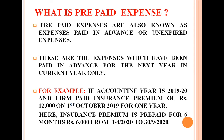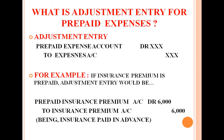This is prepaid insurance premium. Now let us see the adjustment entry for a prepaid expense. Prepaid expense is a type of asset — any expense paid in advance is our asset, so it is debited. The adjustment entry is: Prepaid Expense Account Debit, To Expense Account. For example, if insurance premium is prepaid, the entry would be: Prepaid Insurance Premium Account Debit Rs. 6,000, To Insurance Premium Rs. 6,000 — being insurance premium paid in advance.